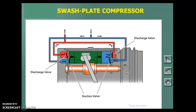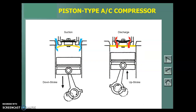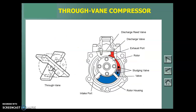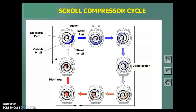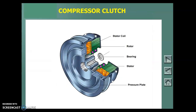Compressors basically compress based on a couple of different designs. You have a swashplate compressor, a piston-type compressor, a vane compressor that works much like a pump, and a scroll compressor. This is material for the AC class — it's complicated. And then the most popular way to control those compressors is with a clutch — most AC systems have some type of clutch. Some are electronic, but the clutch is the most popular.